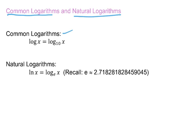Sometimes you will see a logarithm written with apparently no base on it. Notice the base seems to be missing. That's called a common logarithm, and when the base is missing, it's understood to be 10. So anytime you see a log without a base, it's understood to be 10. And you find many, many applications for those, which you'll see in some videos coming up.